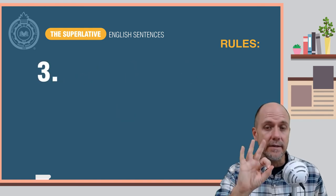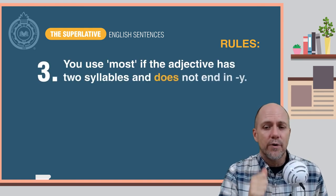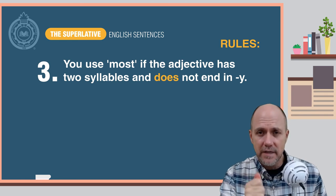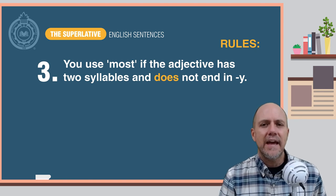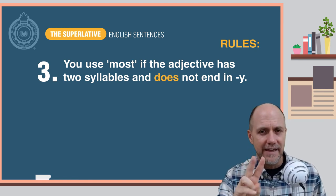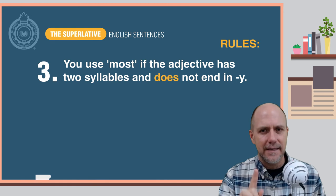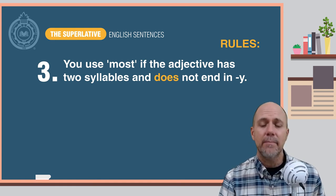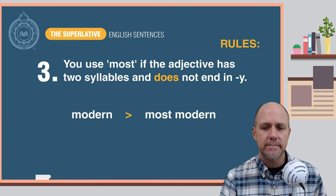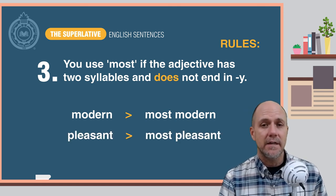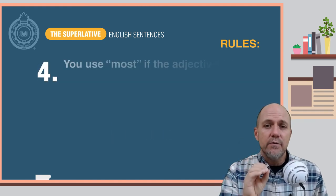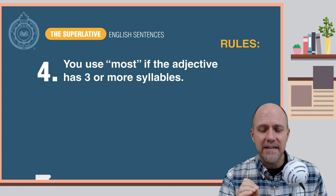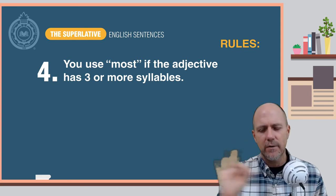Rule number three: you add the word 'most' before the adjective if the adjective has two syllables and does not end in -y. Here are some examples: modern becomes most modern, pleasant becomes most pleasant. Rule number four: you use 'most' if the adjective has three or more syllables.